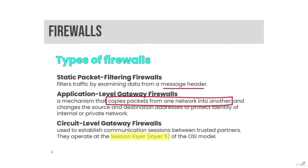Types of firewalls include static packet filtering firewalls, application level gateway firewalls, and circuit level gateway firewalls. Static packet filtering firewalls filter traffic by examining data from a message header. Application level gateway firewalls use a mechanism that copies packets from one network into another, changing the source and destination addresses to protect the identity of internal or private networks. Circuit level gateway firewalls are used to establish communication sessions between trusted partners and operate at the session layer, or Layer 5 of the OSI model.